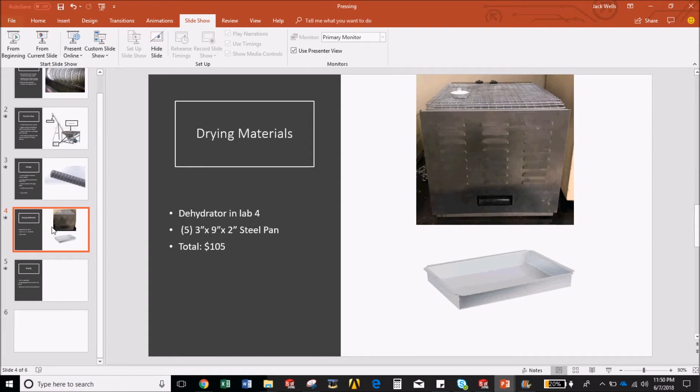Now that the majority of the liquid has been removed from the fish waste in the pressing process, the press cake can be put into the drying process. To start off the drying process a sample of press cake will be put into the oven in lab 4 to determine the oven dry weight of the press cake and then we'll be able to find the incoming moisture content of the press cake.